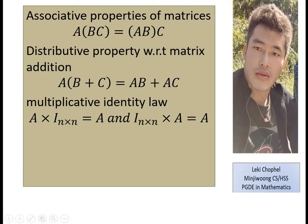The multiplicative identity law states that if you multiply matrix A by the identity matrix I, your result is always A. That is, A×I = I×A = A. Multiplying any matrix by the identity matrix gives back that same matrix.